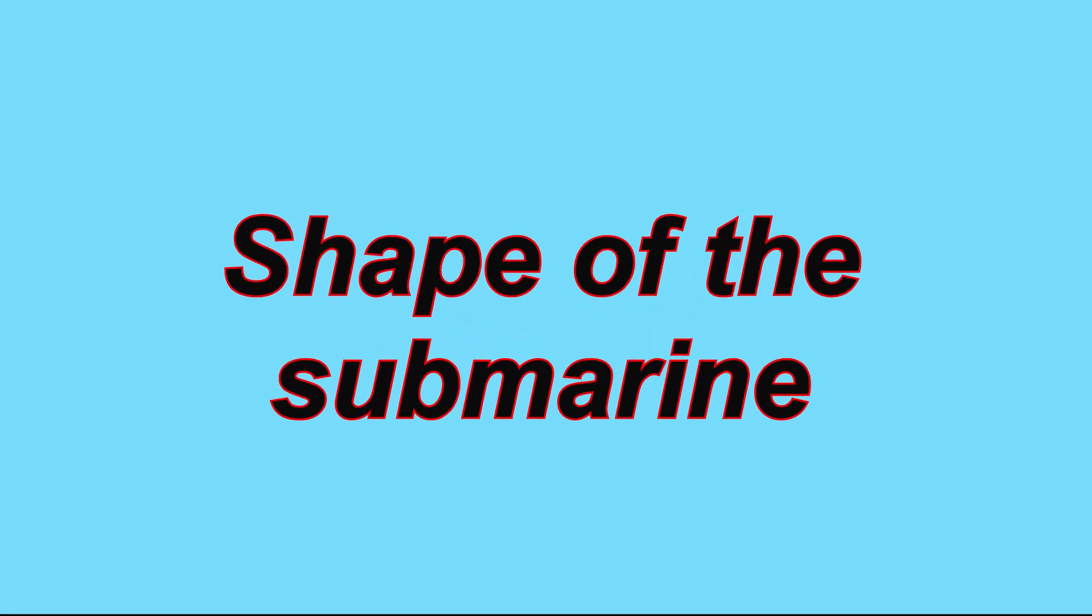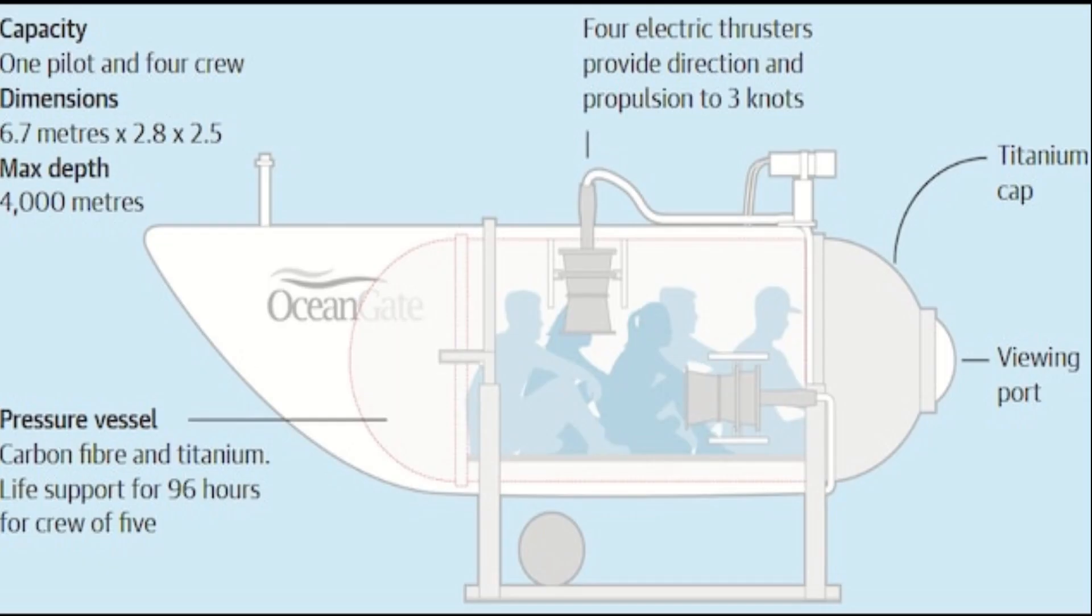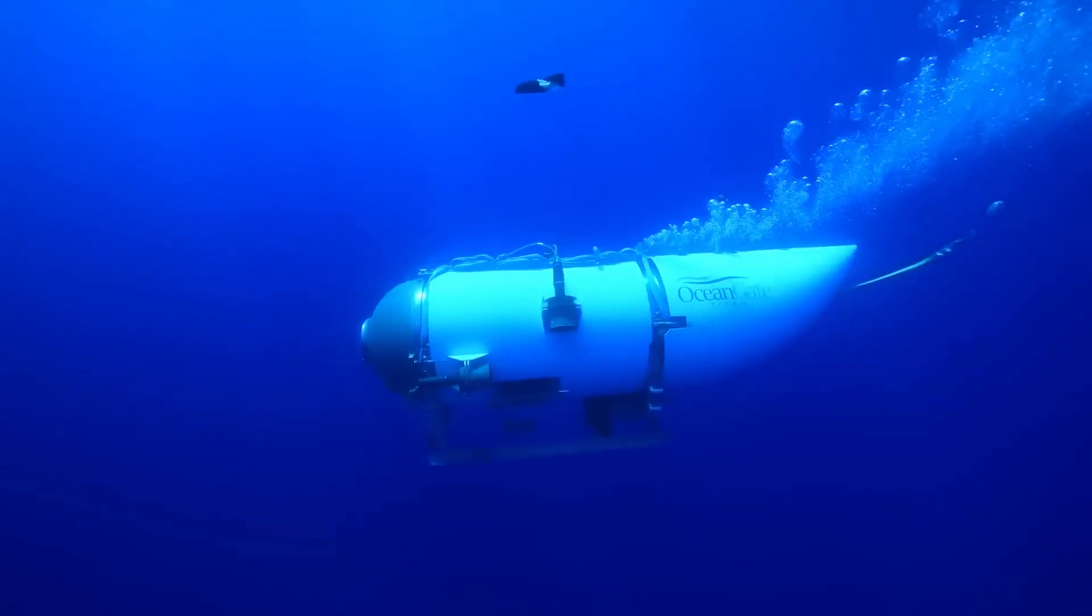So first reason is the shape of the Titan Submarine. It was 22 feet long, equivalent to 6.7 meters. Elongating the cabin space and submersible increases pressure load in the midsection.